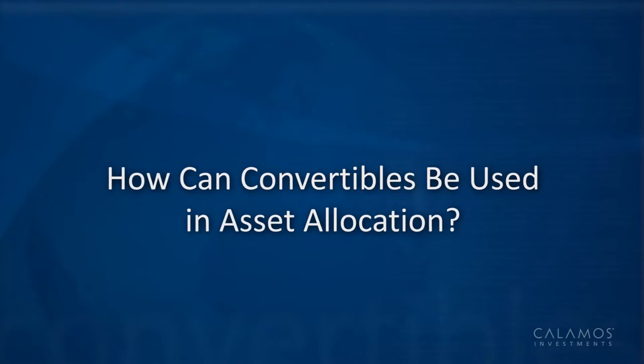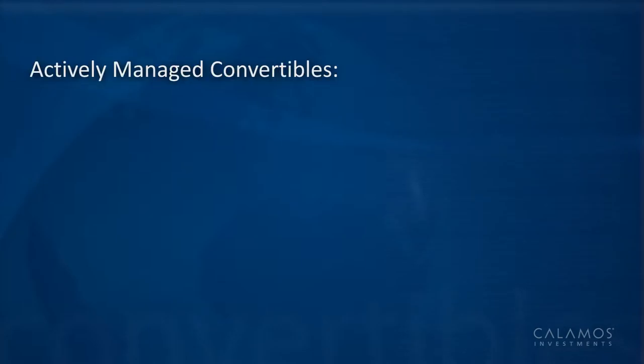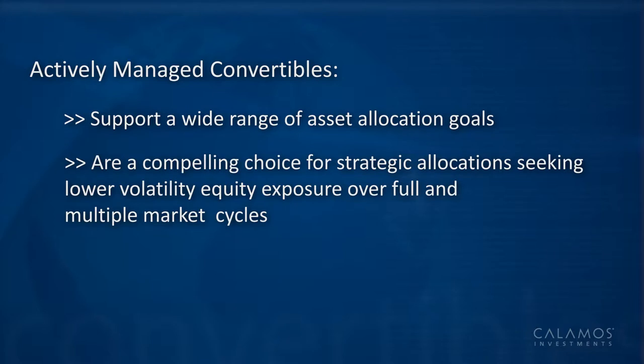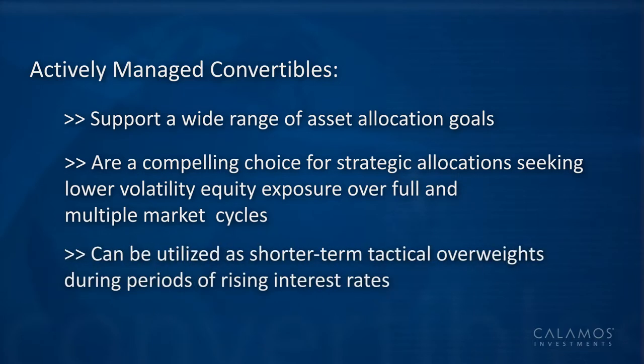Today we're here to talk about convertible securities and asset allocation. Convertible securities are often thought of as a single asset class, but this ignores the variations within the convertible universe. When actively managed, convertibles can support a wide range of asset allocation goals. These hybrid characteristics make them a compelling choice for strategic allocations, seeking lower volatility equity exposure over full and multiple market cycles. Convertibles can also be utilized as shorter-term tactical overweights during periods of rising interest rates.